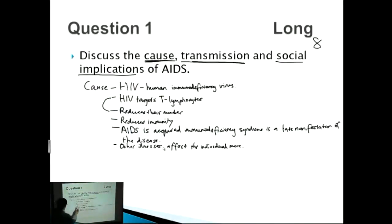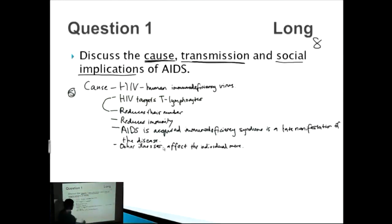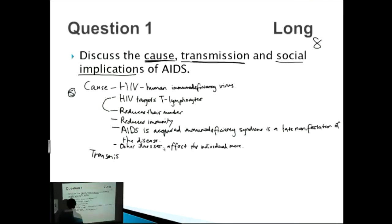We've got about four to five points on causes. They'll usually give you a maximum number of marks per section — this one might be three to four marks each, for a total of about eight to nine. Now let's talk about transmission, and there's not actually that much to cover here.